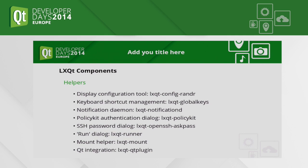We also have a couple of helpers: a display configuration tool, a tool to manage global keyboard shortcuts, a notification daemon responsible for drawing notification bubbles on your screen, a PolicyKit authentication dialogue for running commands with enhanced privileges, and the same for OpenSSH. We have a run dialogue, a mount helper, and one of the very neat things is the LXQt Qt plugin — if you have KDE installed, it will just pick up and apply all your settings from KDE, including your theme, fonts, and everything.